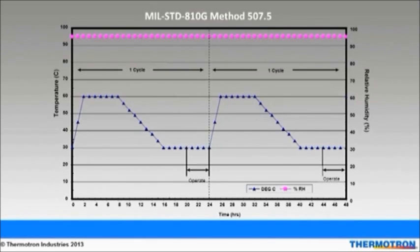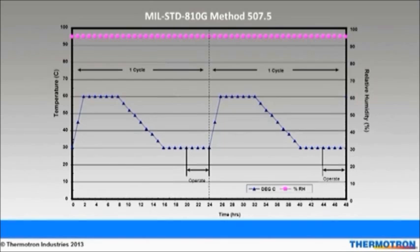Next, we cool down to 30 degrees Celsius and soak at that temperature for four hours. After that, we turn the product on and allow it to soak at the same temperature for another four hours. Notice that we maintain 95% relative humidity throughout the entire cycle.